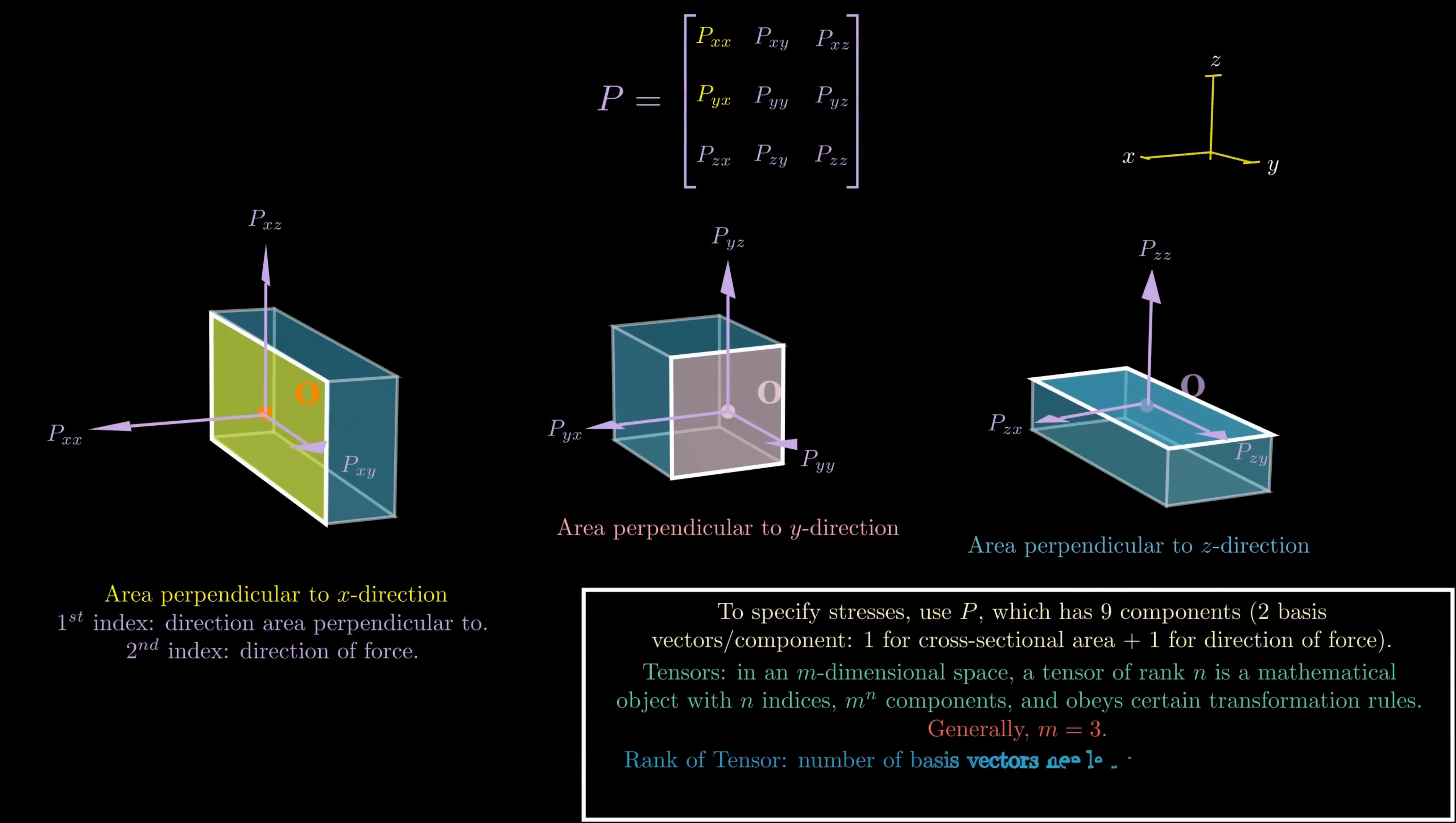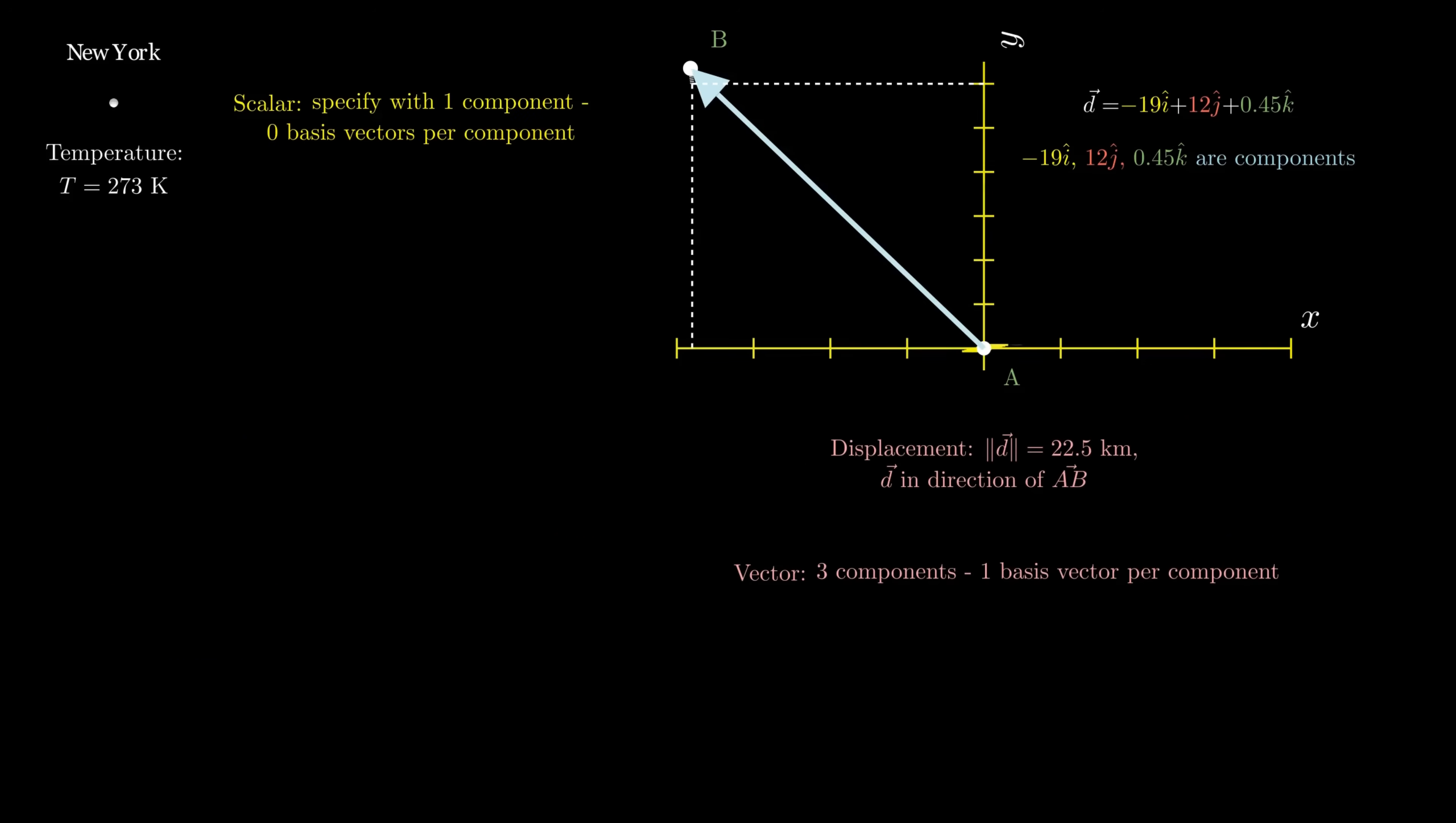For instance, if we go back to our scalar, we can see that we needed zero basis vectors to specify our scalar component. A scalar has no direction, it's just a number, and therefore we can say that a scalar is a tensor of rank zero. What about a vector? Well, for a vector, I showed you that each component is specified by one basis vector. Therefore, we can say that a vector is a tensor of rank one.